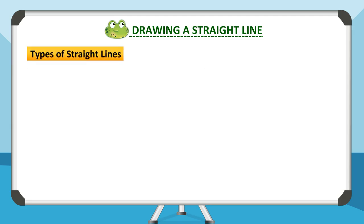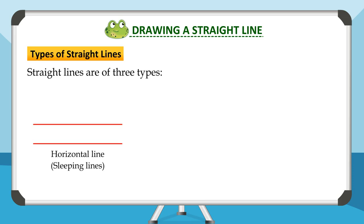Types of straight lines. Straight lines are of three types: horizontal lines or sleeping lines, vertical lines or standing lines, and slanting lines.